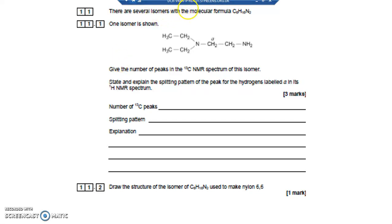There are several isomers with the molecular formula C6H16N2. One isomer is shown here. The number of peaks in the 13 carbon NMR spectrum of this isomer, you've got to work that out.